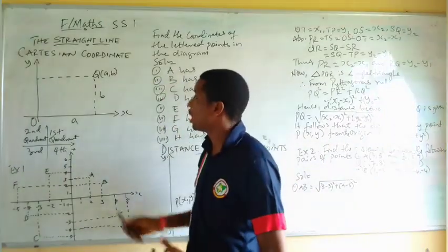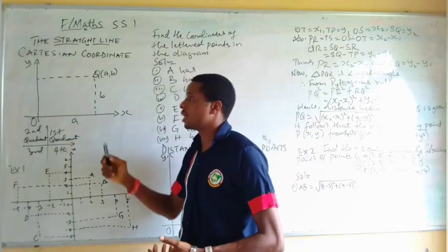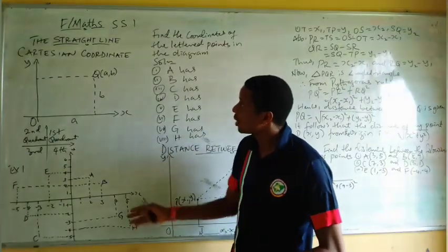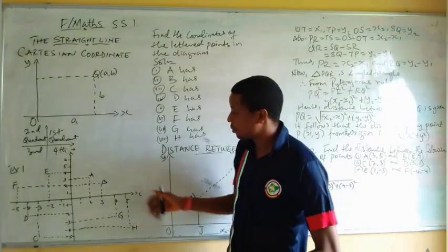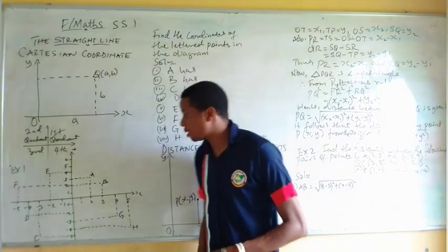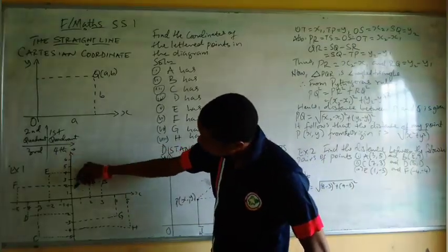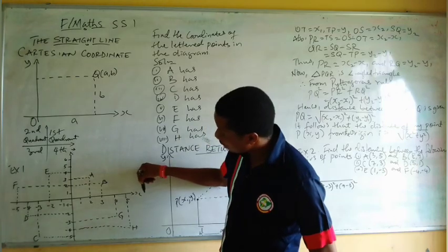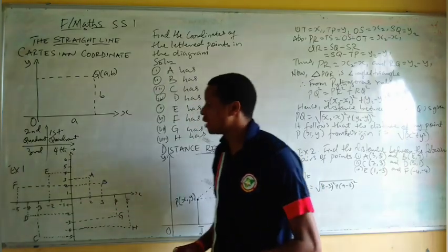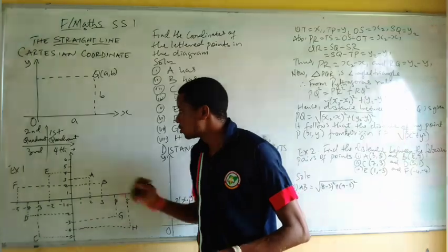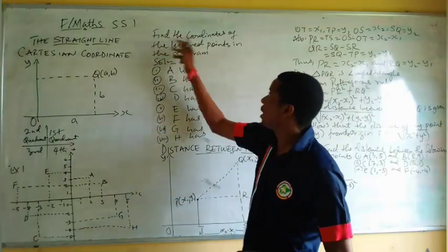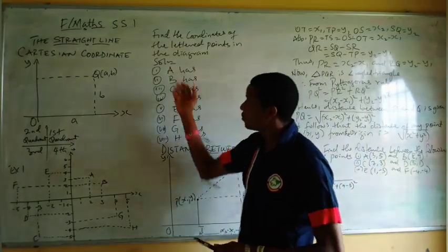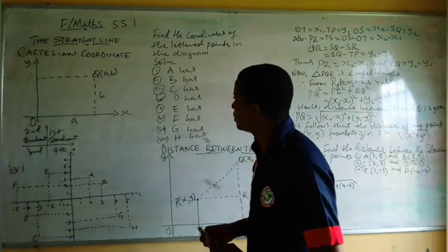Let's see an example. Now suppose this is our Cartesian plane — that's example one. We have these points. This is the positive axis of Y, this is the negative axis. This is the positive axis of X and this is the negative axis. We want to identify these points. The question says: write the coordinates of the marked points in the diagram.